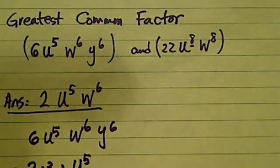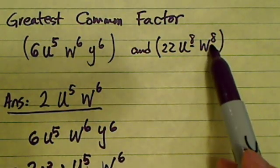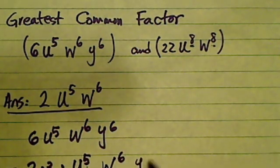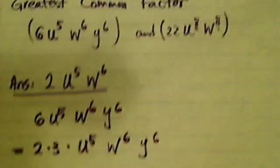is a smaller one. You always break it down to the smaller one. w^6, this is to the 8, so I'm going to leave it there. And then y^6—that's the first term.